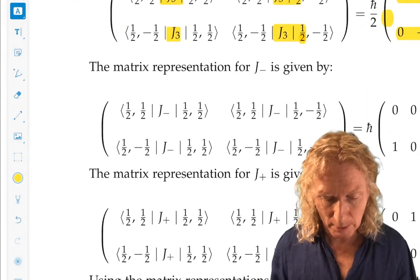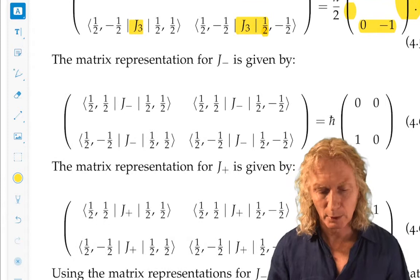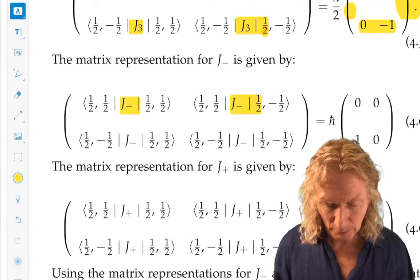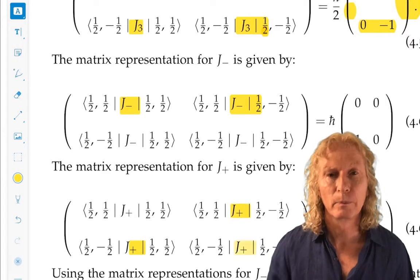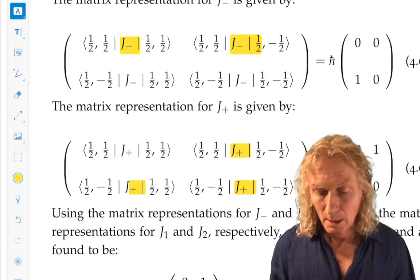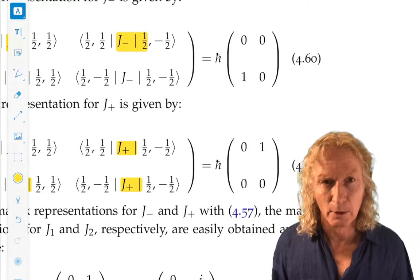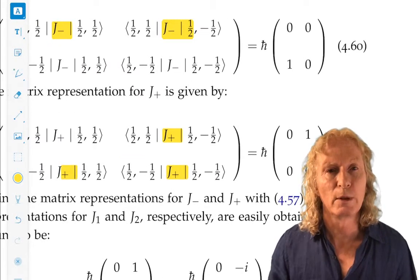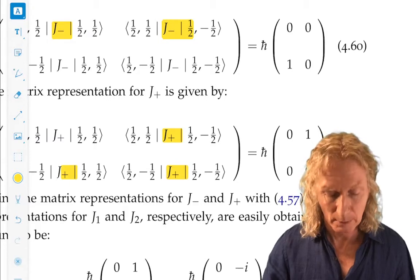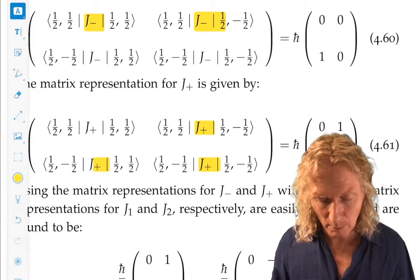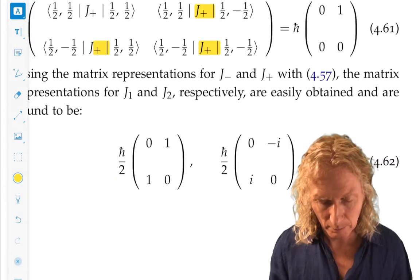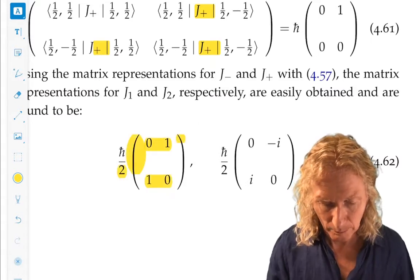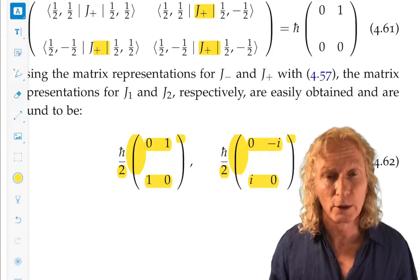Alright, now we can compute the matrix representation for j minus and j plus in the same way. And that's pretty easy to do. You can verify my calculations. And using the fact that j1 and j2 can then be computed from j minus and j plus, this is what we get for the matrix representations of j1 and j2.